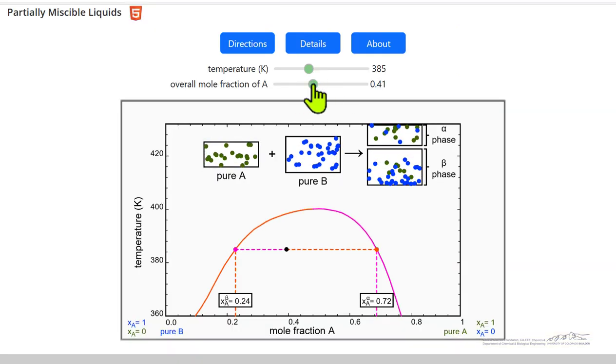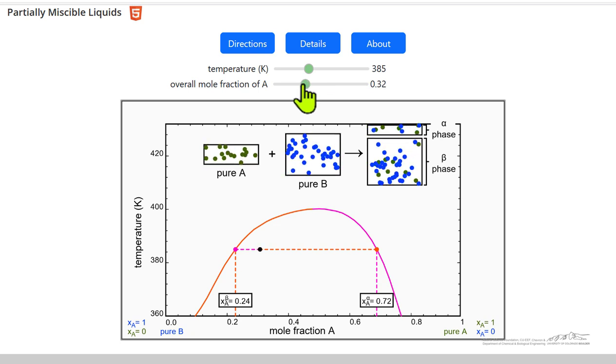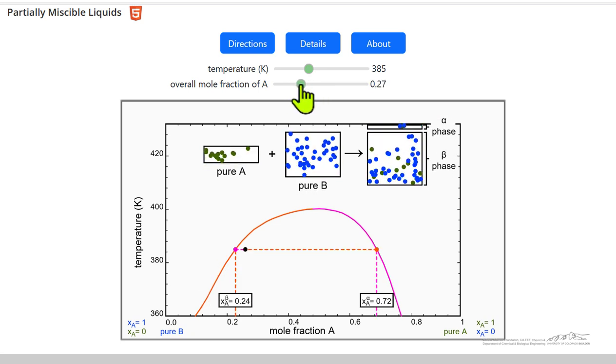If I change the mole fraction to mostly mixing B, you can see this box is large compared to A.